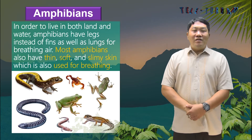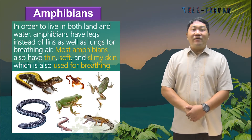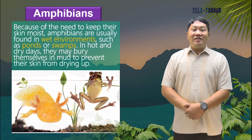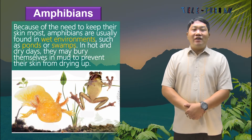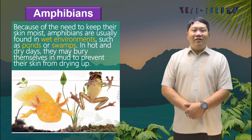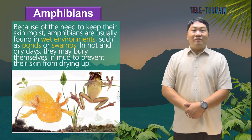The moist surface of their skin enables them to absorb oxygen from the air. Because of the need to keep their skin moist, amphibians are usually found in wet environments such as ponds or swamps. In hot and dry days, they may bury themselves in mud to prevent their skin from drying up.